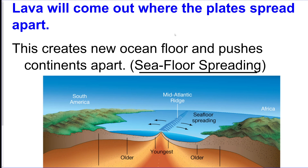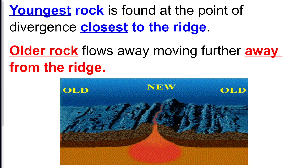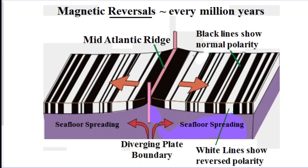We also call this seafloor spreading, because the seafloor spreads apart in this area. We get a mid-ocean ridge that forms when the oceanic crust pulls apart. The youngest rock is always found closest to where the pulling apart happens, because that's where new lava is coming up. As it cools, it becomes the new part of the plate and moves outward, getting older. New rock is in the middle, old rock is on the sides.